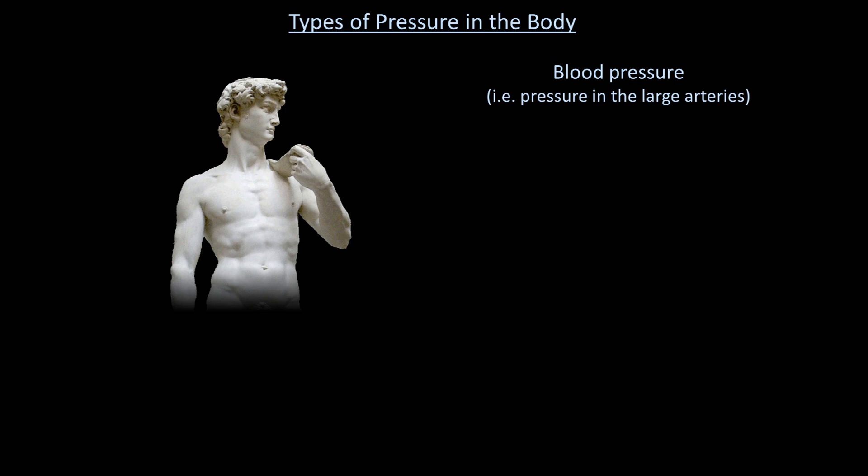This pressure is the consequence of pulsatile blood flow, so therefore it is non-constant. When the heart squeezes during the systolic phase of the cardiac cycle, blood flows into and through the arteries rapidly and the pressure is relatively high. When the heart relaxes during the diastolic phase of the cardiac cycle, blood flow slows down and the pressure is relatively low.